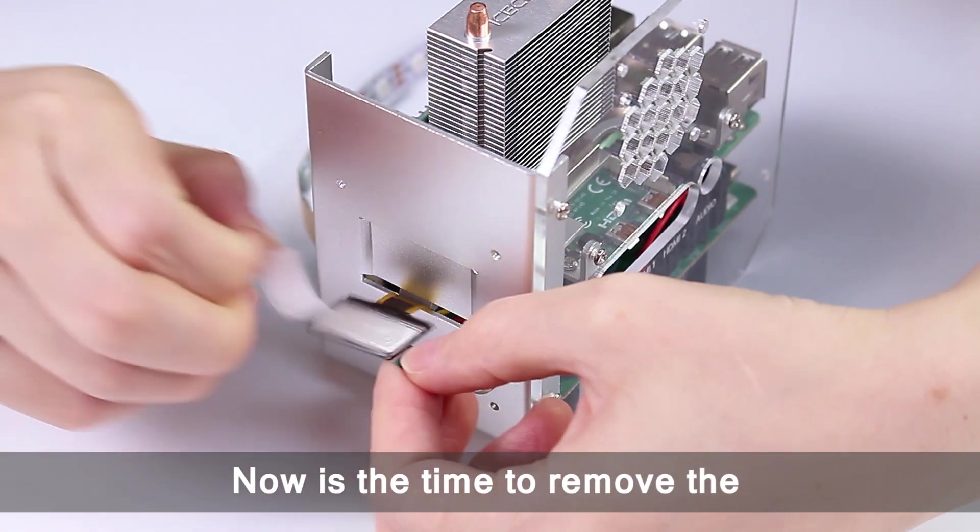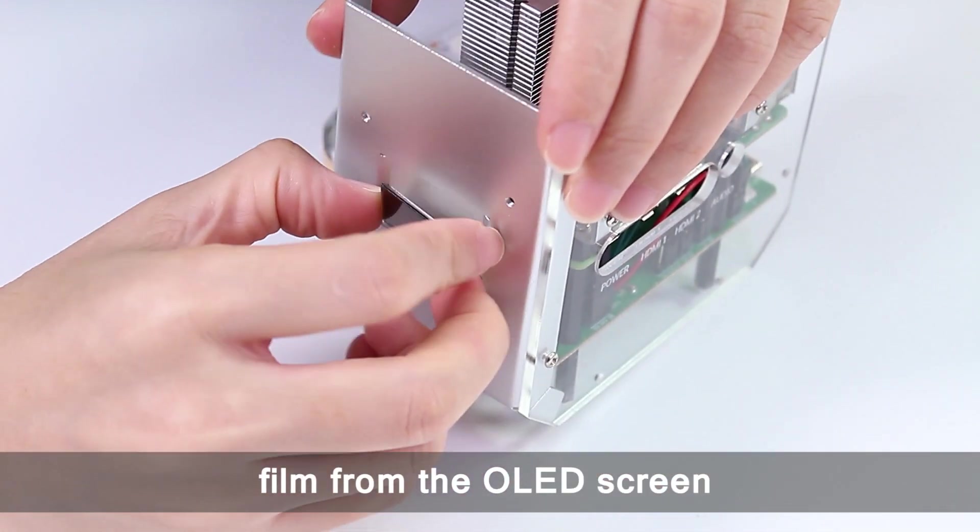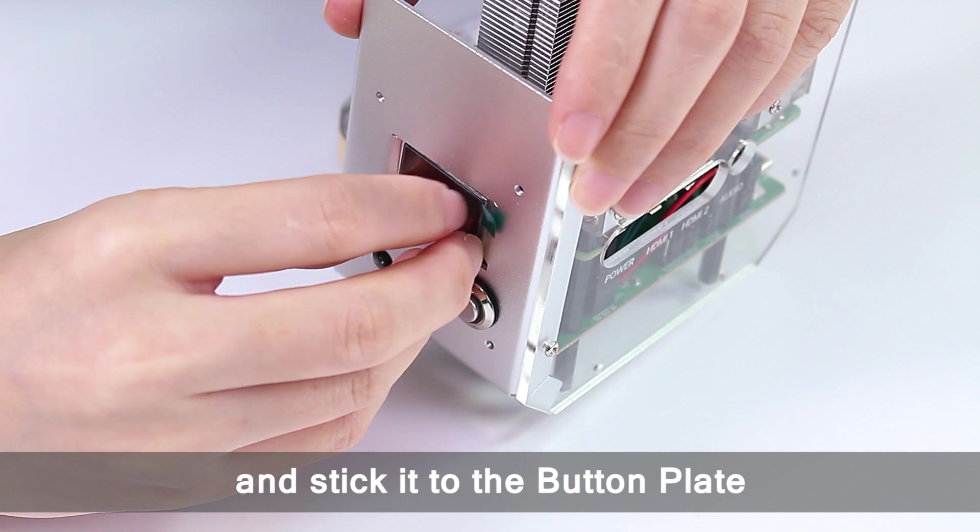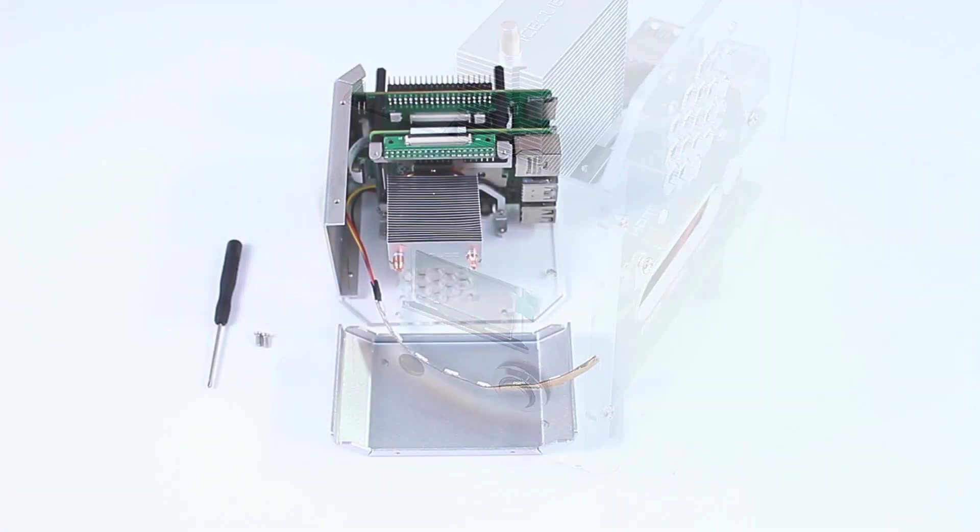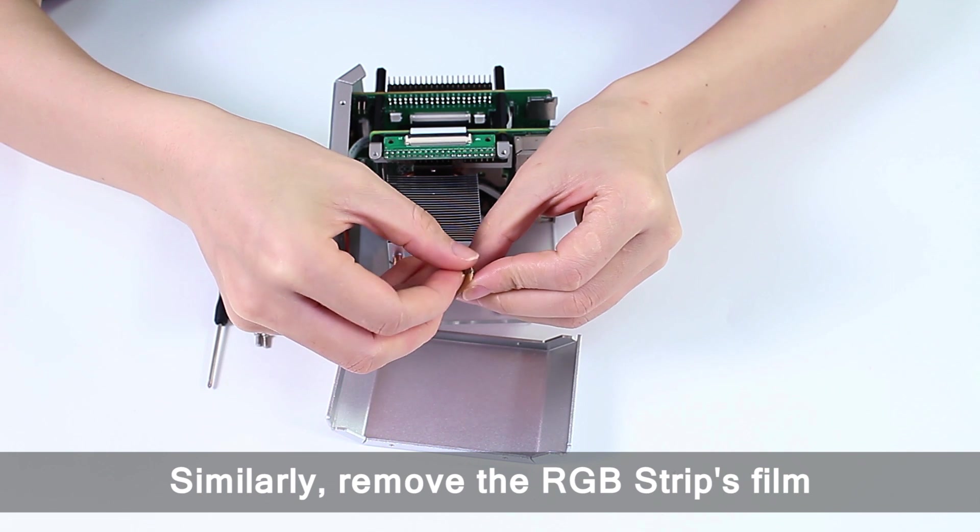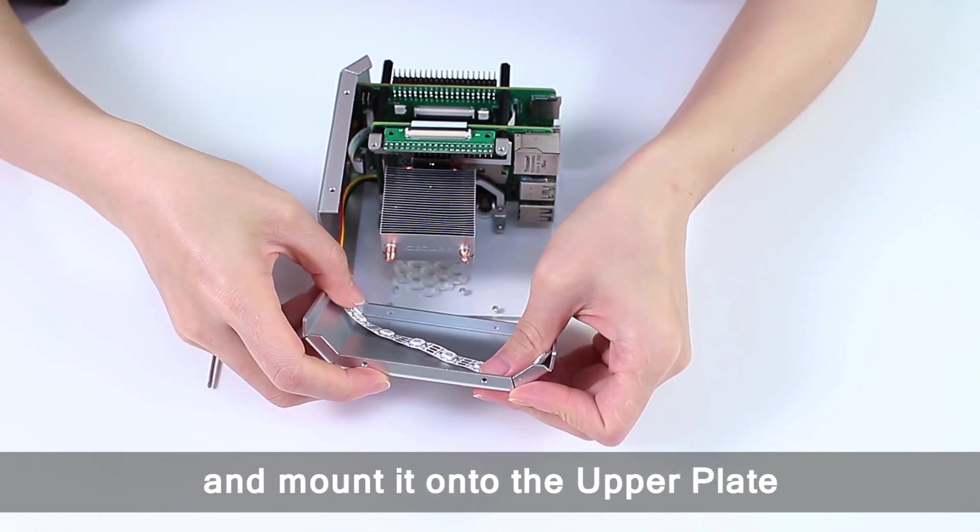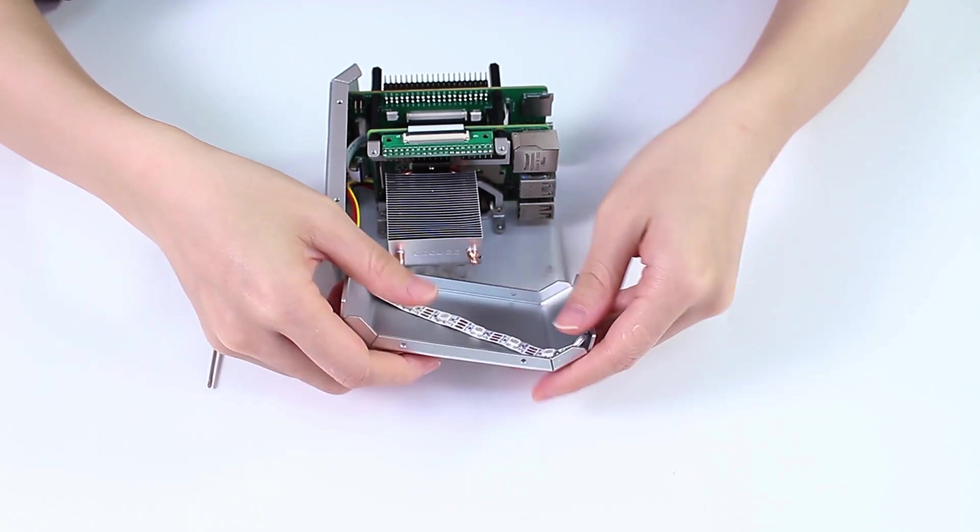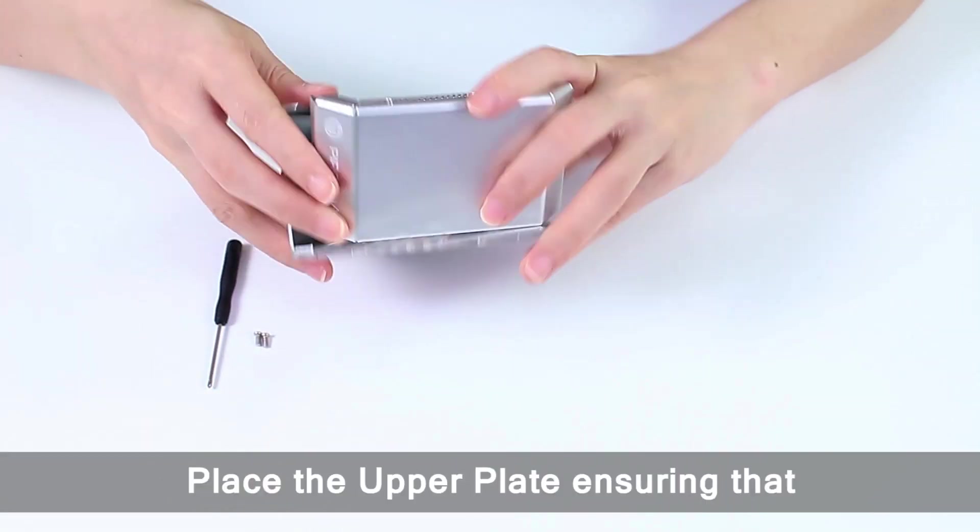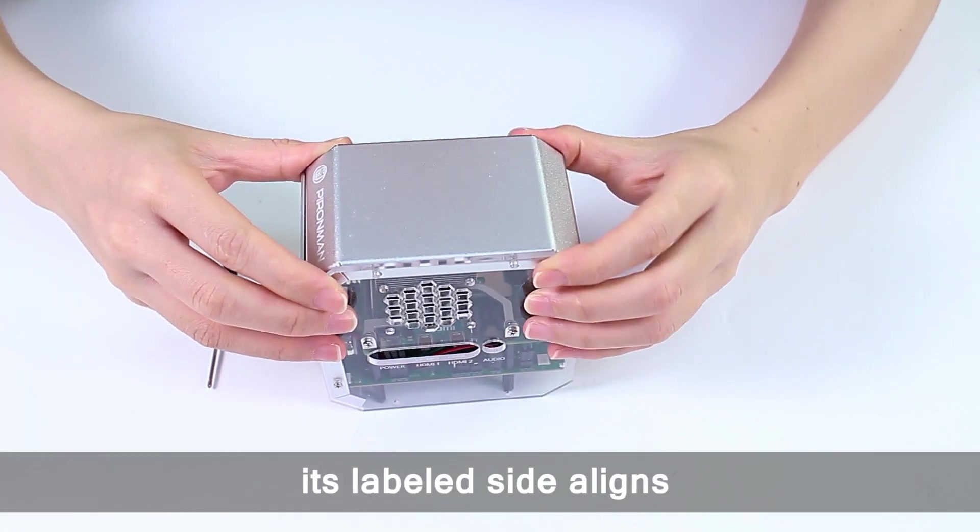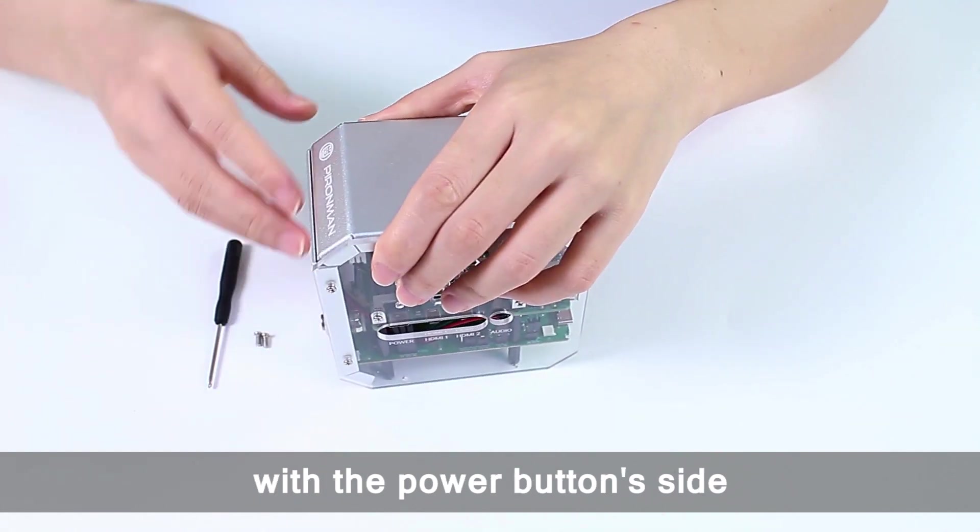Now is the time to remove the film from the LED screen and stick it to the button plate. Similarly, remove the RGB strips film and mount it onto the upper plate. Place the upper plate ensuring that its labeled side aligns with the power button's side.